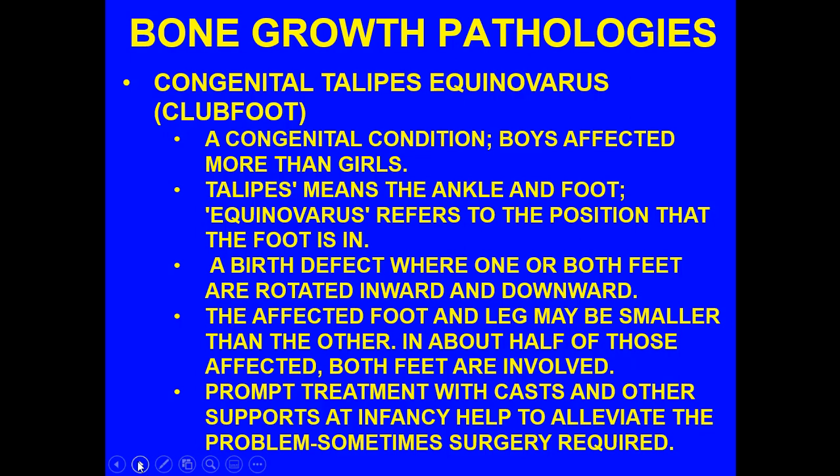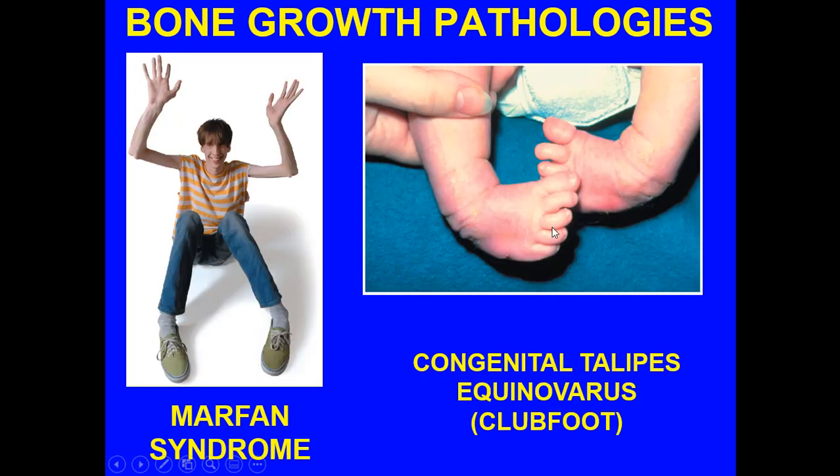Congenital talipes equinovarus, otherwise known as club foot, is a congenital condition where boys are affected more than girls. Talipes means the ankle or foot; equinovarus refers to the position of the foot. This is a birth defect where one or both feet are rotated inward and downward. The affected foot and leg may be smaller than the other, and in about half of those affected, both feet are involved. Prompt treatment with casts and other supports at infancy helps to alleviate the problem, although sometimes surgery is involved.